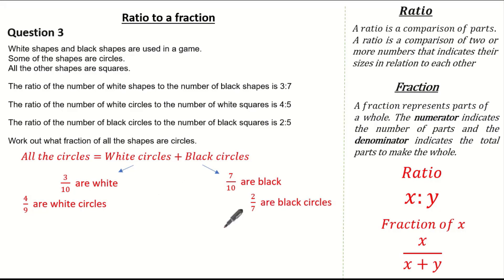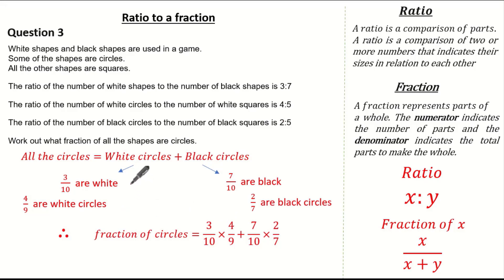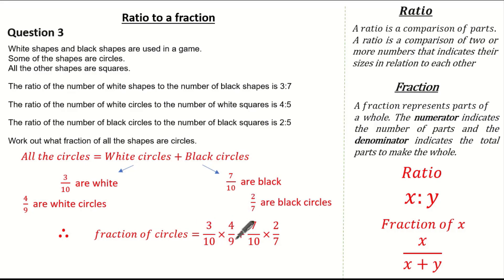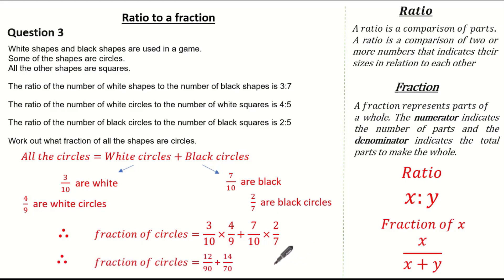Now we can identify the fraction of circles. Four ninths of the white shapes are circles, so that's four ninths times three tenths. Two sevenths of the black shapes are circles, and seven tenths are black, so that's two over seven multiplied by seven over ten. To find the total fraction of circles, simply add these together: twelve over ninety plus fourteen over seventy gives an answer of one over three. So the fraction of circles is one third.